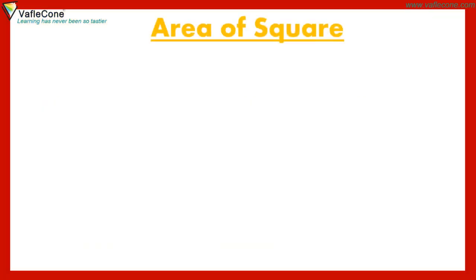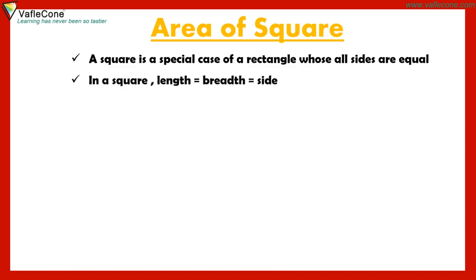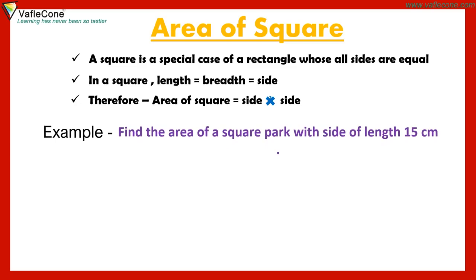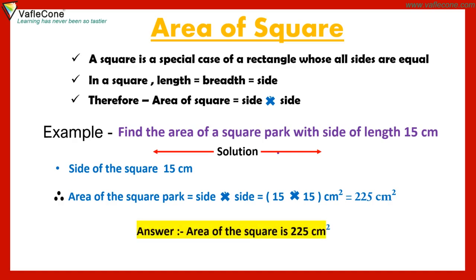Area of a square: A square is a special case of a rectangle whose all sides are equal. In a square, length equals breadth equals side. Therefore, area of square = side into side. Example: Find the area of a square park with side of length 15 cm. Solution: Area = 15 into 15 cm² = 225 cm². The area of the square is 225 cm².